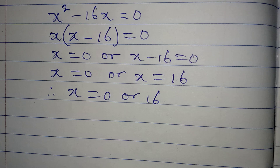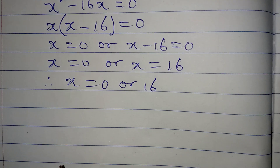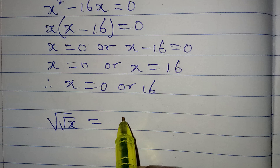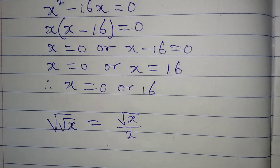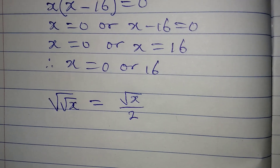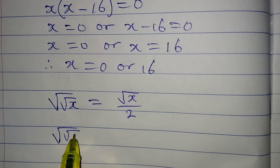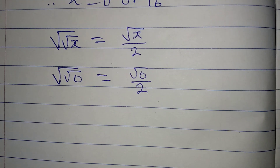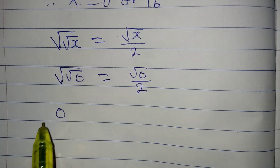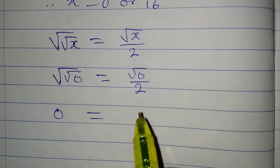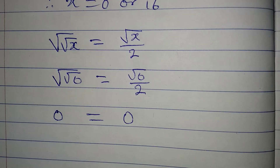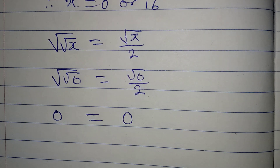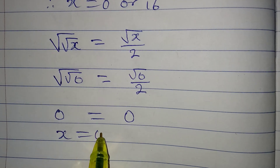We are not sure whether these are correct, so let's go back and check the original equation: square root of the square root of x equals square root of x over 2. Let's see if both sides are equal when x equals 0. The square root of the square root of 0 equals the square root of 0 over 2. Both sides are 0, since the square root of 0 is 0, and 0 divided by 2 is 0. So x equals 0 is correct.